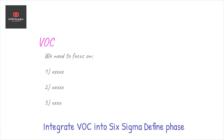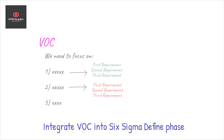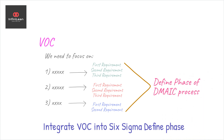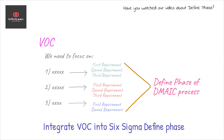However, this is an ongoing cycle. Continuously monitor VOC to adapt to changing customer needs, keeping your processes robust and relevant. In essence, the voice of the customer is the guiding star of Six Sigma. Without it, efforts can veer off course. Embrace VOC to not only meet customer expectations, but also anticipate their aspirations.